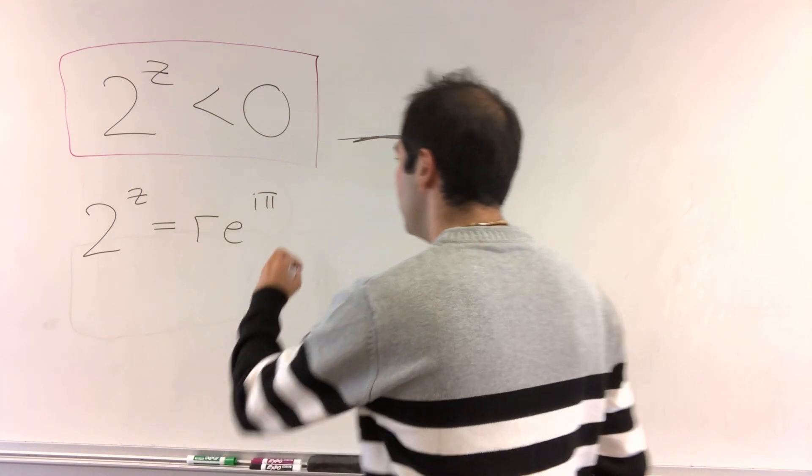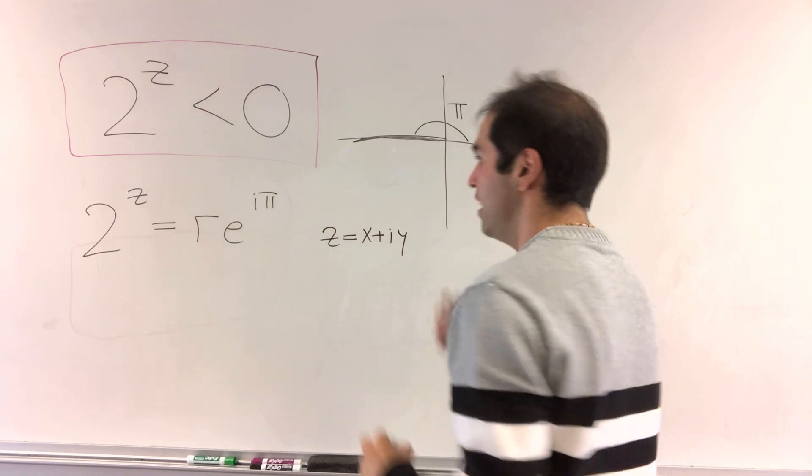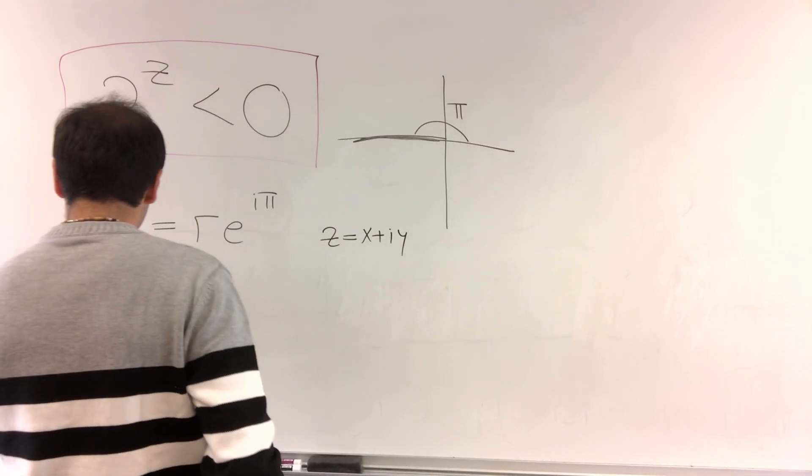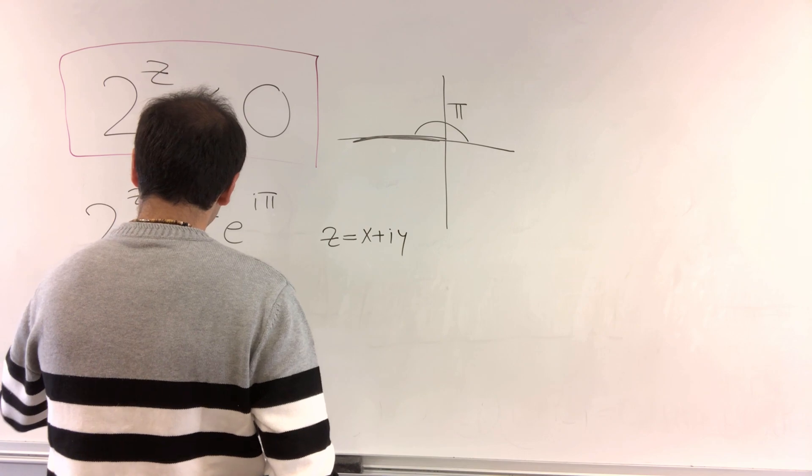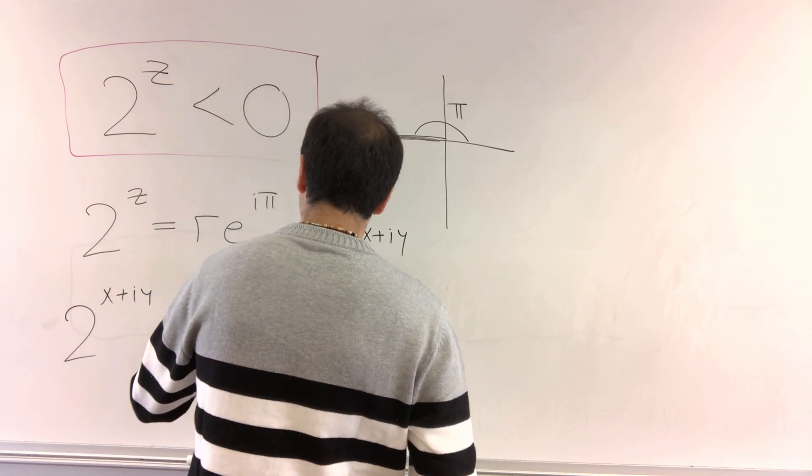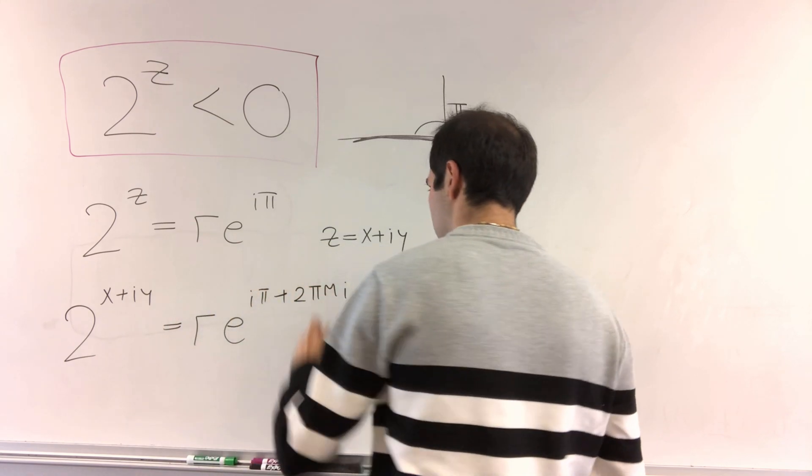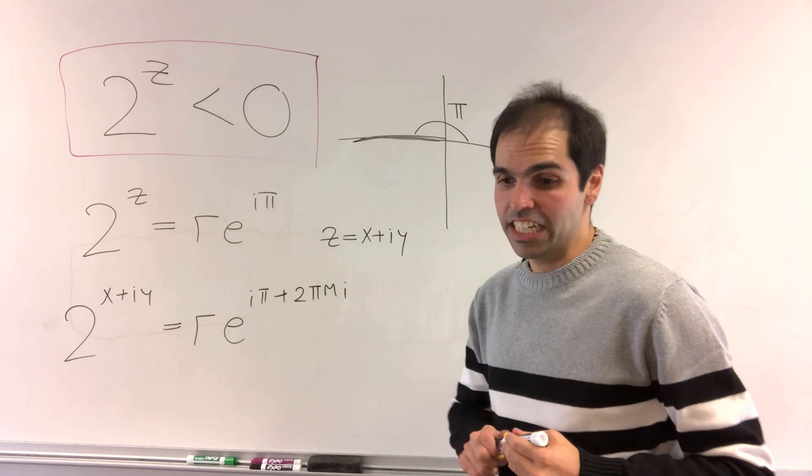And so, in particular, if z is x plus i y, then what we want to figure out is when is 2 to the x plus i y equals r e to the i pi plus 2 pi m i, where m is any integer.